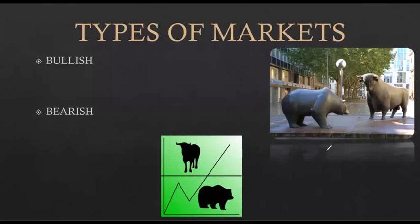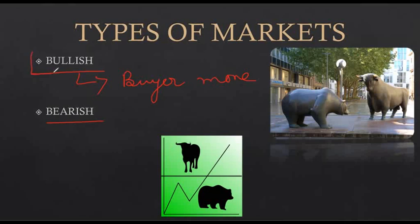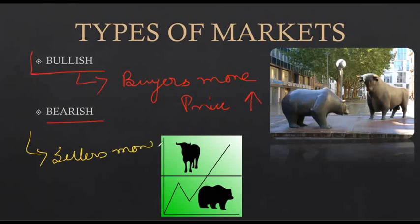There are two kinds of market: bullish market and bearish market. A market where buyers are more — where the demand to buy shares is higher — is known as a bullish market, meaning share prices will increase. The bearish market is where sellers are more, supply of shares is high but demand is low, meaning prices will crash — the price of shares will get reduced. This is known as the bearish market.